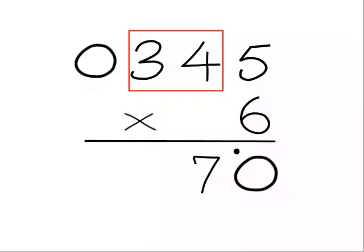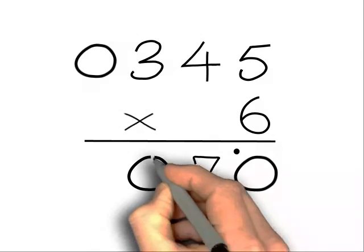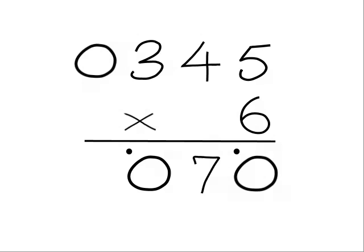Moving left again, we're now at 3. The neighbour for 3 is 4, so 3 plus 2 is 5. Now 3 is an odd number so we add 5 again so it's 10. So we write down a 0 and put a dot for the carry.